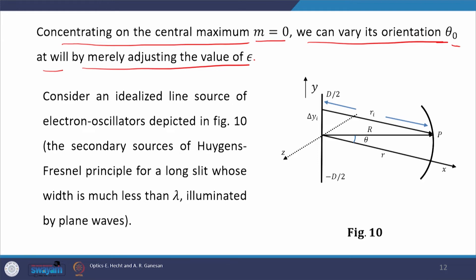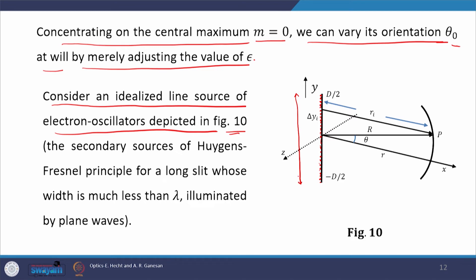Now let us consider an idealized case. Until now we considered point oscillators separated by a certain distance d, but what if d is extremely small? If d is extremely small, then this array of point oscillators can be termed a line source. Consider an idealized line source of electron oscillators as shown in figure 10. Here the point oscillators are very closely spaced — almost touching — with an infinitesimally small separation. We can therefore safely call it a line source of overall length capital D.